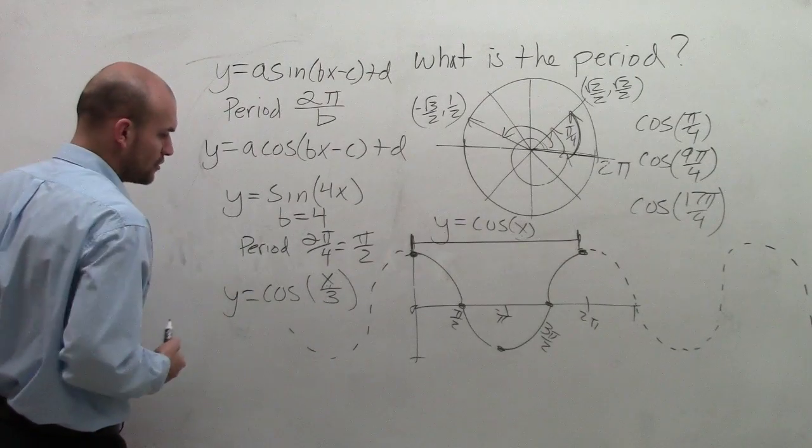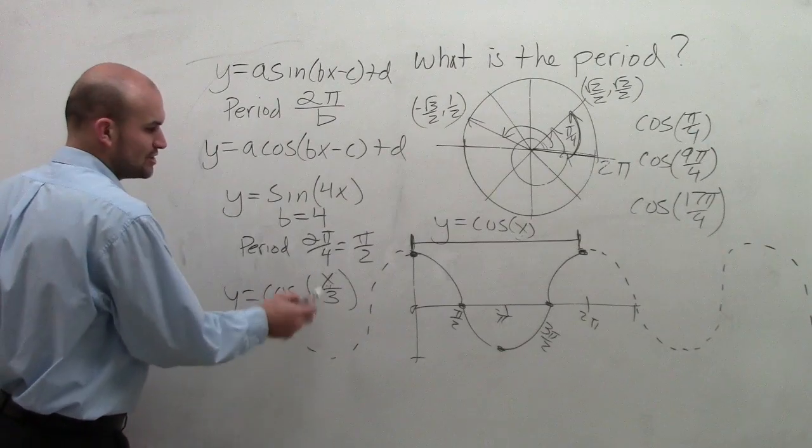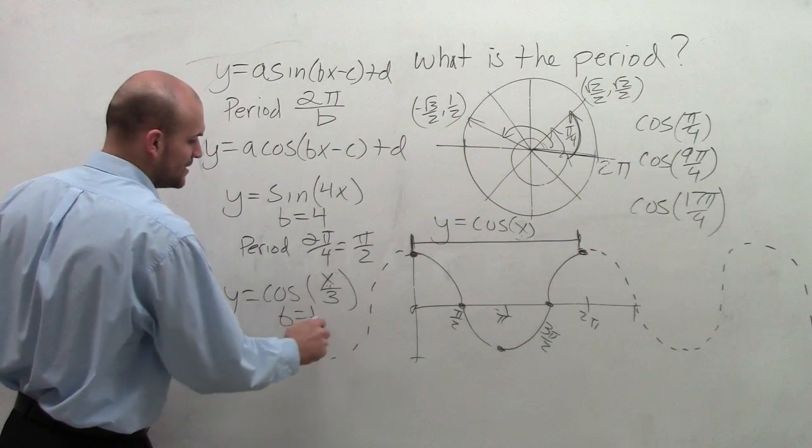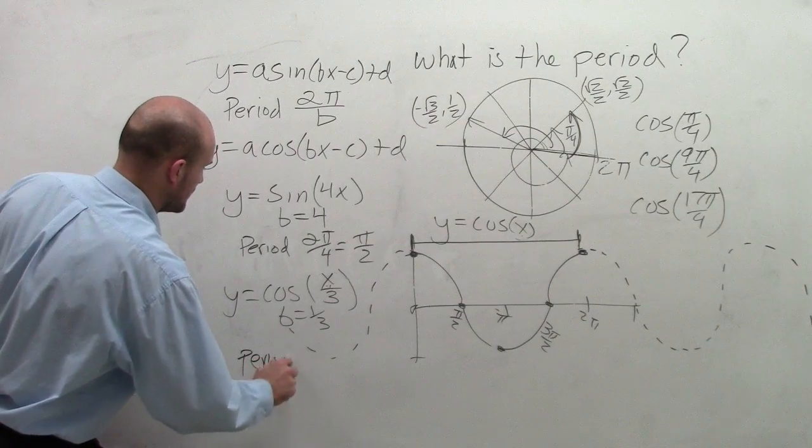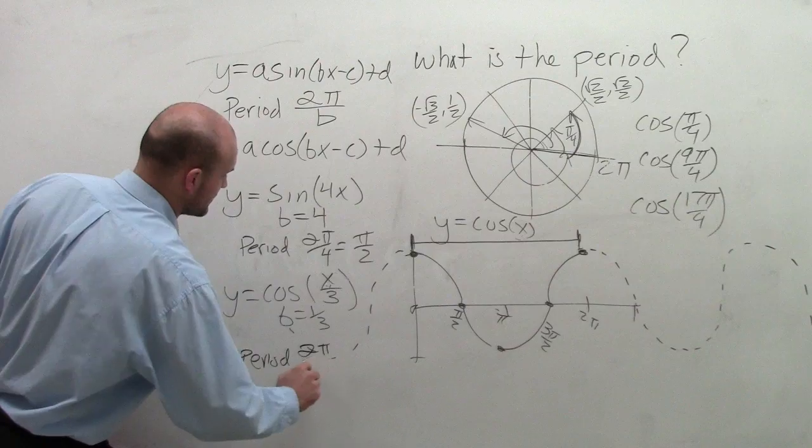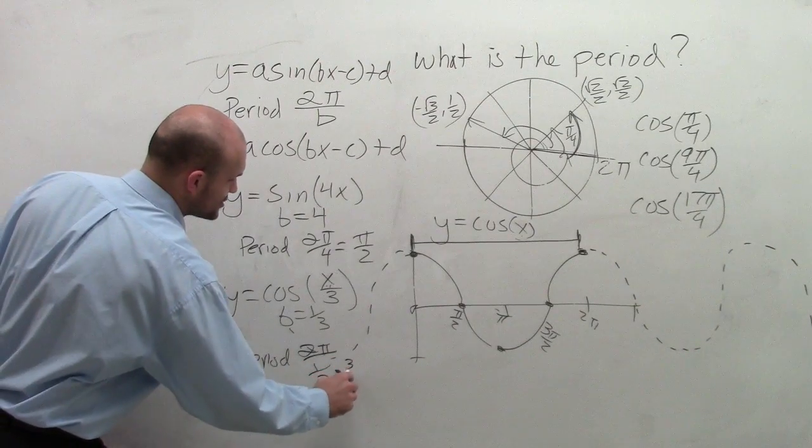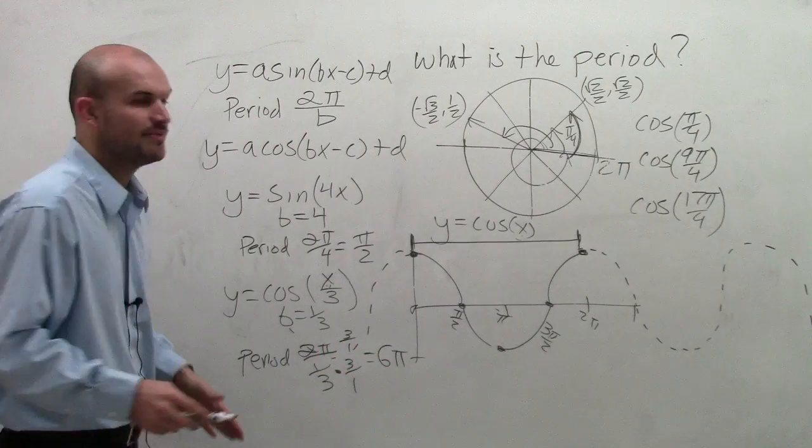Now when I look at cosine of x over 3, I can determine that b is equal to the value in front of x, which is 1 being divided by 3. So therefore, it's equal to 1 third. So my period is going to be 2 pi divided by 1 third. And to divide by a fraction, we multiply by the reciprocal, and therefore I get a period of 6 pi.